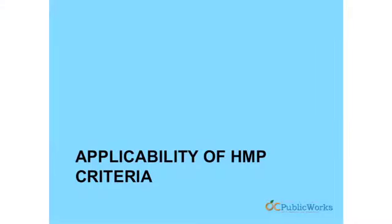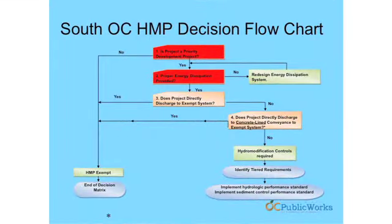This is the flowchart in the HMP. This will help developers understand if their project is subject to HMP requirements. Step one: is it a PDP? Then you go down to the next step: is proper energy dissipation provided? For outfalls from priority development projects into the stream network, we want to make sure that you have a properly designed outfall so that you're not getting any erosion from that outfall.